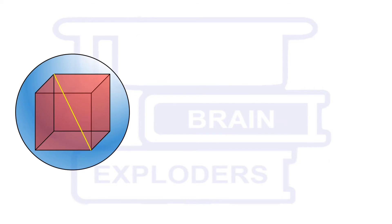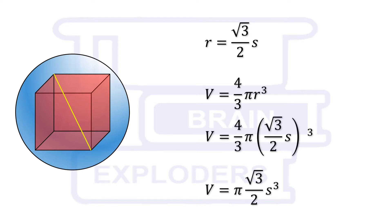Volume of sphere is 4 pi by 3 times r cubed. In terms of s, we get volume equals to pi root 3 by 2s cubed.